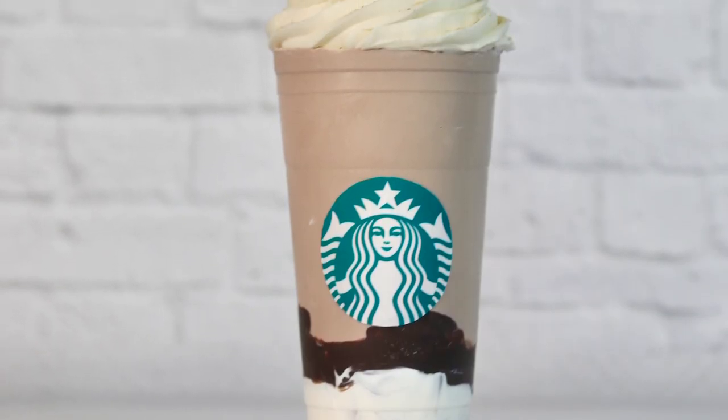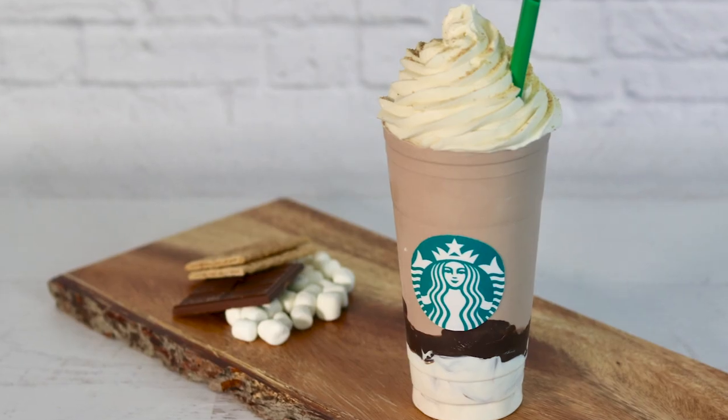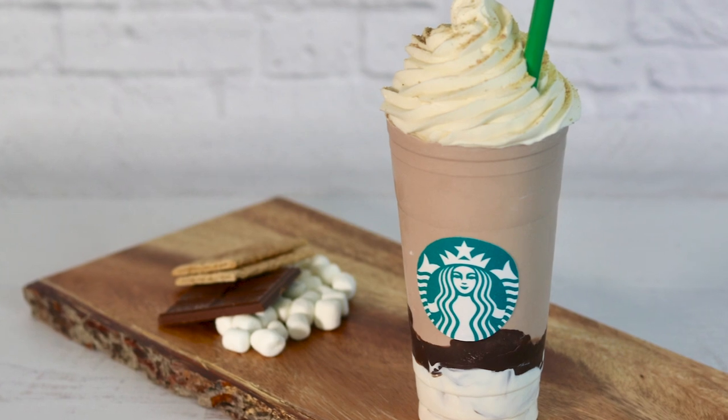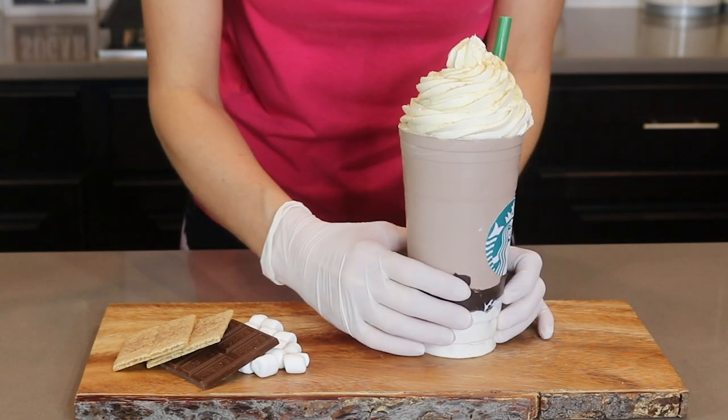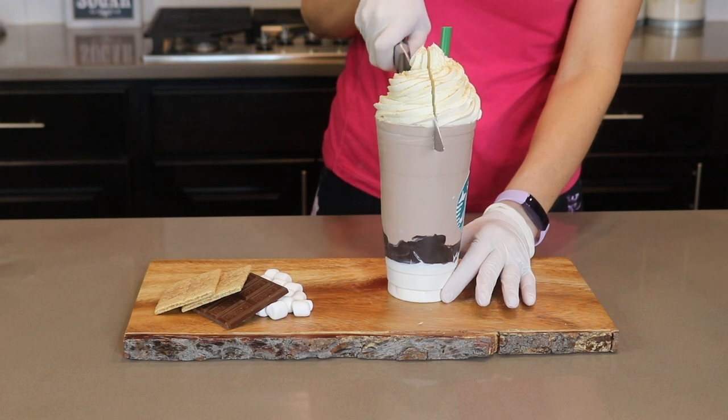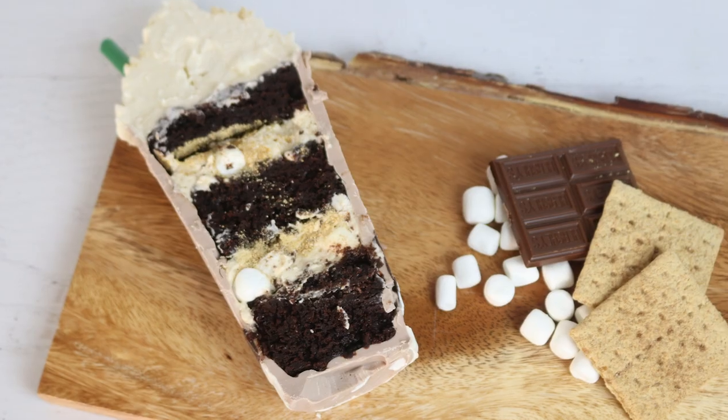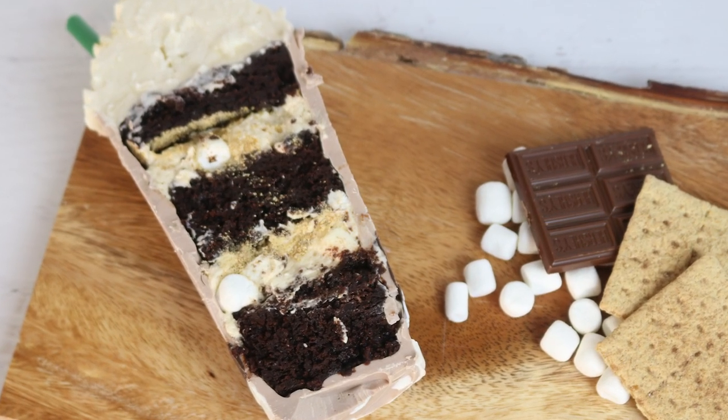My Starbucks s'mores frappuccino cake is complete. This one looks pretty realistic to me. I think my kids are really going to love this. I would like to say that the cutting part was perfect, but it cracked when I cut it. I think next time, I'll try to make the chocolate cup a little bit thinner so that it cuts better. Regardless of that, this is what it looks like on the inside.